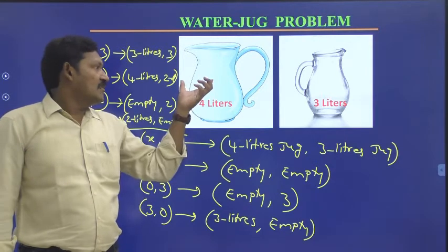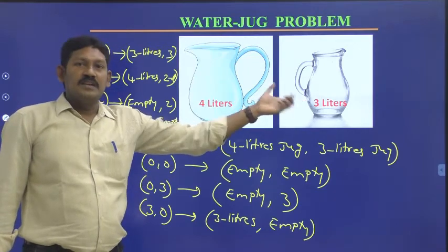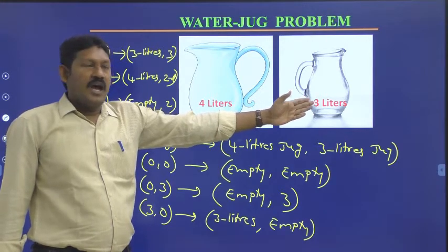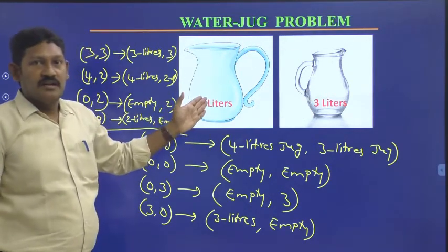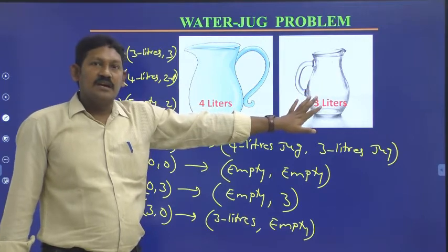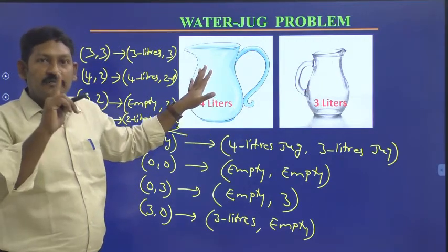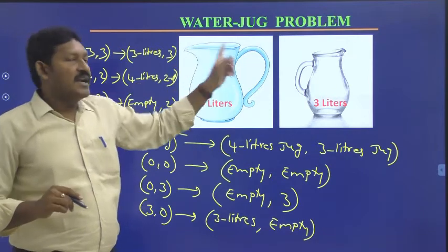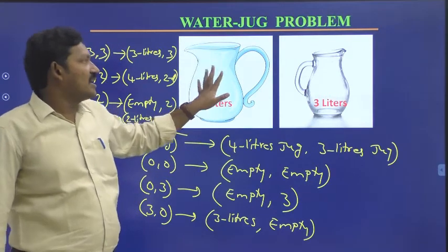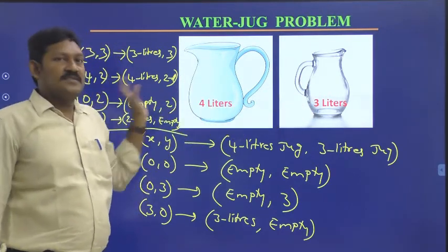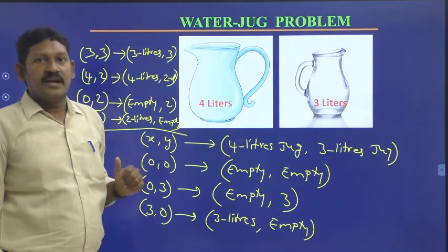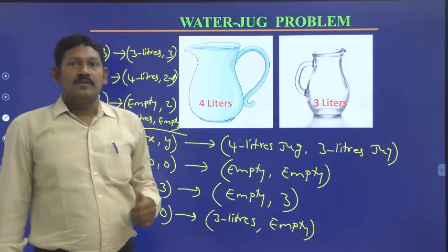This is how we managed to keep two liters of water in the four liter jug. To recap: initially both jugs are empty. We filled the three liter jug and poured it into the four liter jug — now the four liter jug has three liters and the three liter jug is empty. We refilled the three liter jug, then poured one liter into the four liter jug to fill it, leaving two liters in the three liter jug. We emptied the four liter jug and poured those two liters in — done. This is how we solve the water jug problem. Thank you.